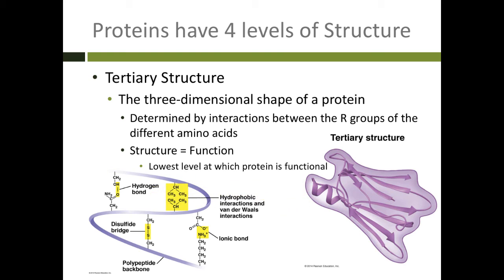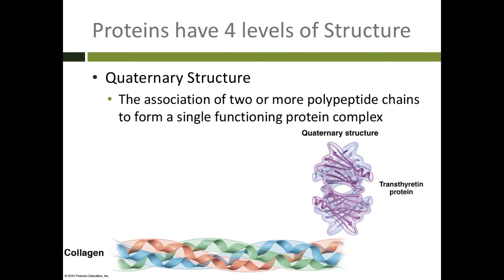Some proteins stop there, but other proteins have a fourth level of structure called quaternary structure. If you have two or more polypeptide chains that are in tertiary structure already, they can come together into a complex that works to do the job. For example, we have two different proteins here. Transthyretin is a transport protein in your cerebrospinal fluid and carries thyroid hormone around. It's made of two tertiary structure proteins that come together in a quaternary structure.